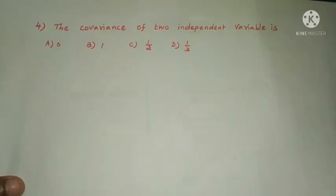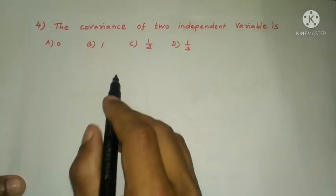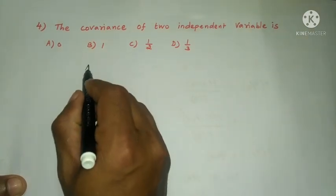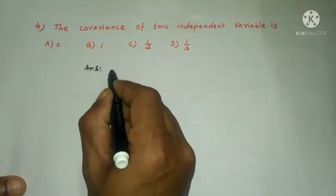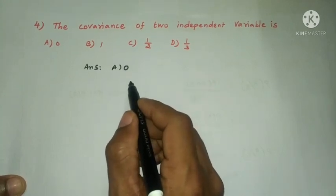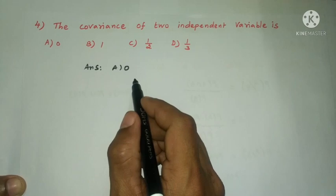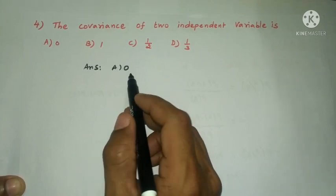Next question: The covariance of two independent variables — Option A: 0, Option B: 1, Option C: 1/2, Option D: 1/3. If two variables are independent, then the covariance of the two variables is 0. The answer is Option A.